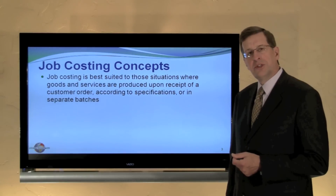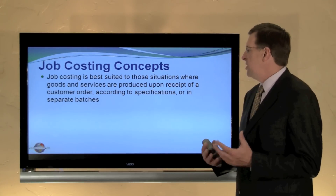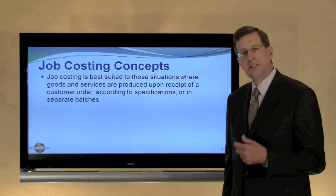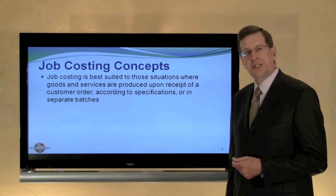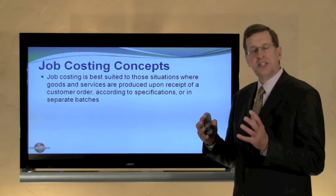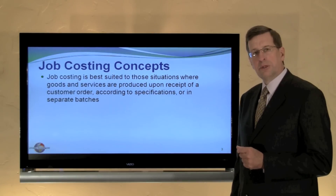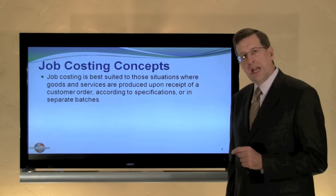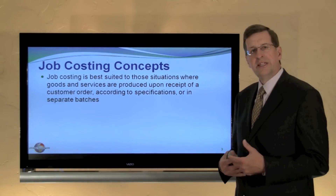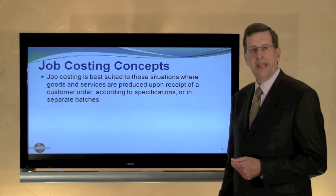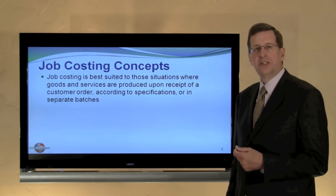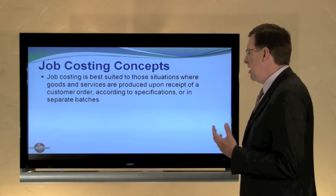Job costing is best suited to situations where we are producing goods and services upon receipt of a customer order, according to customer specifications, or perhaps in separate batches. Examples could be the manufacture of aircraft or automobiles. In a future chapter we'll look at process costing, which is an alternative model applied to goods produced in continuous processes — for example, manufacturing paint that is produced and packaged continuously, making it hard to identify discrete jobs.